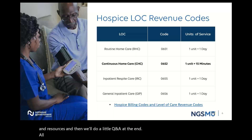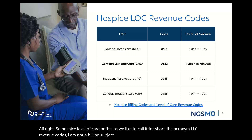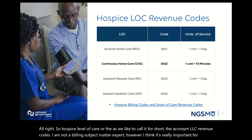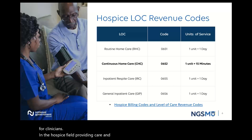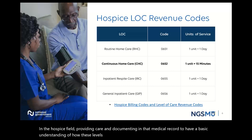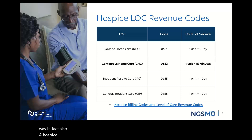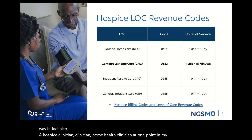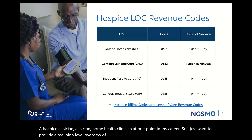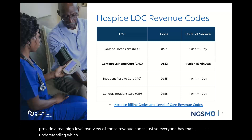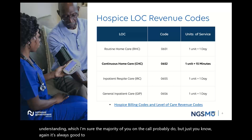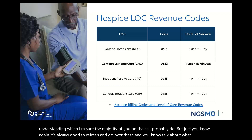So hospice level of care — or as we like to call it for short, the acronym LOC — revenue codes. I am not a billing subject matter expert. However, I think it's really important for clinicians in the hospice field providing care and documenting in that medical record to have a basic understanding of how these levels of care are billed. I know that firsthand because I was, in fact, also a hospice clinician and home health clinician at one point in my career. I just want to provide a real high level overview of those revenue codes, just so everyone has that understanding, which I'm sure the majority of you on the call probably do. But it's always good to refresh and talk about what they represent from that claims perspective.